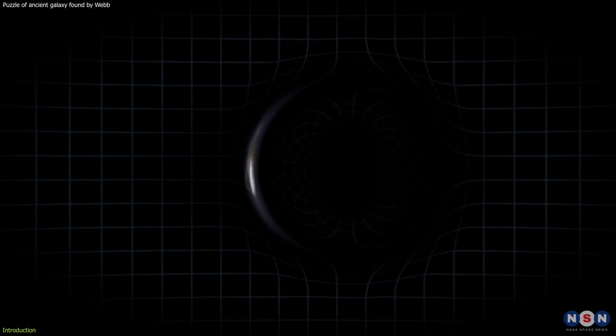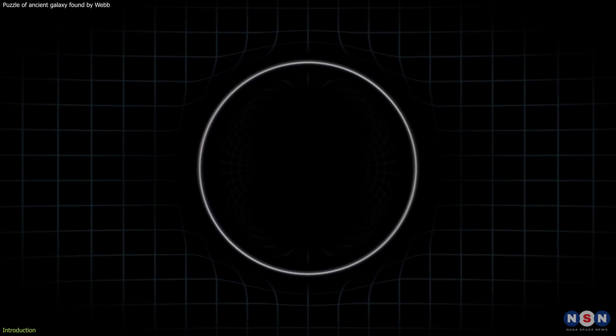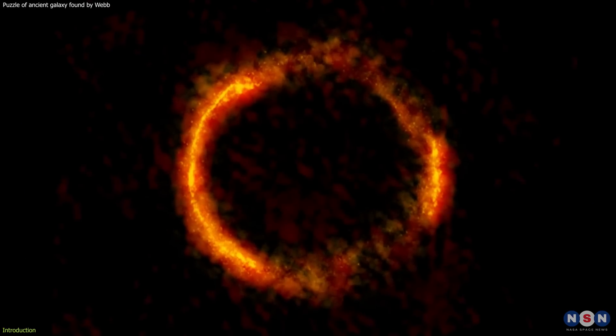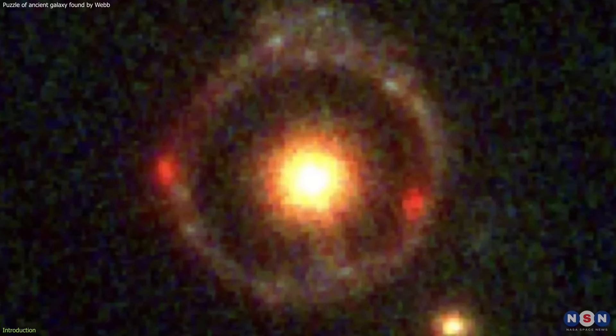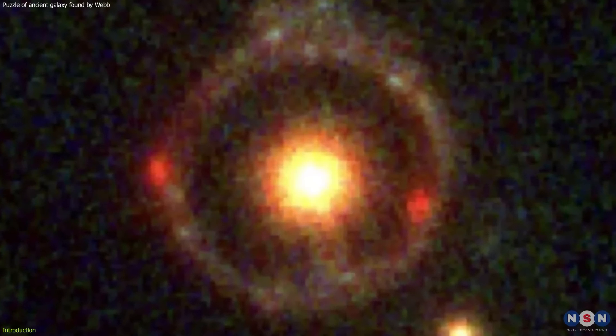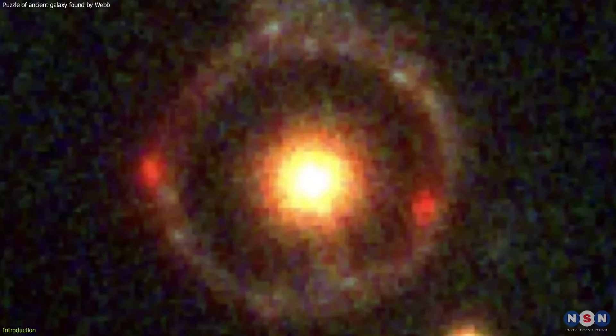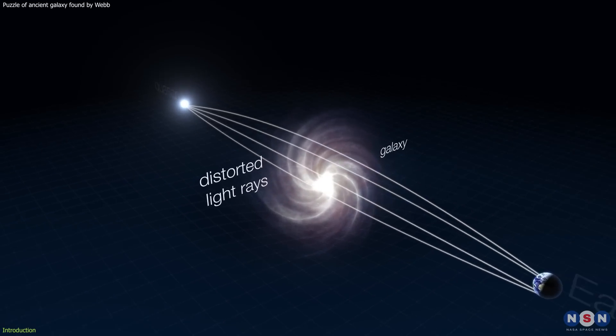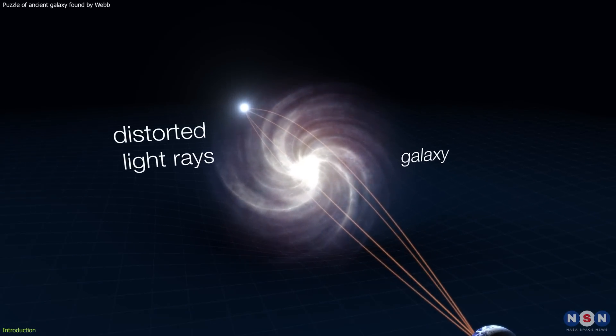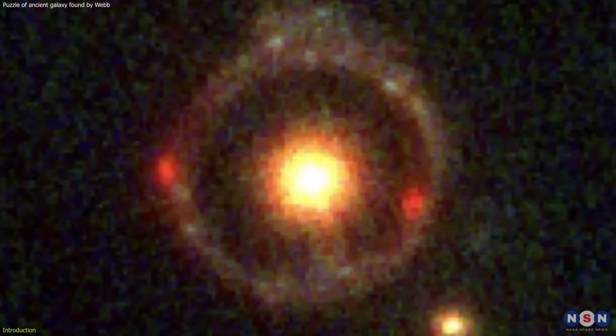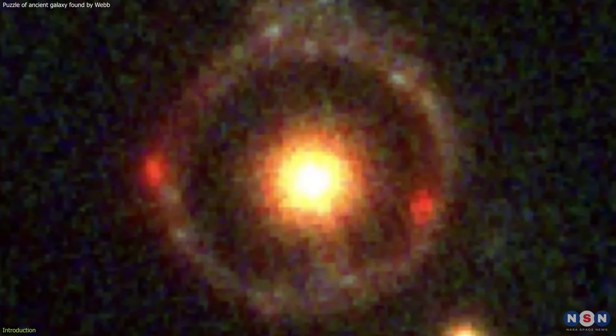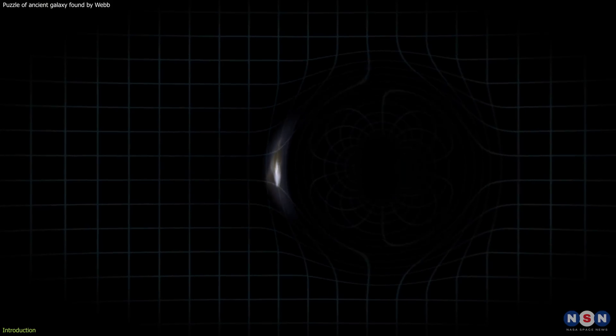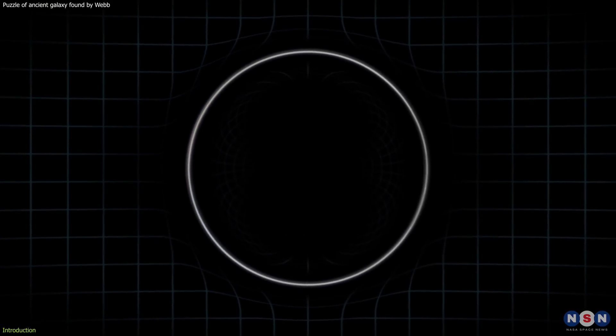This discovery was particularly surprising because of its association with an Einstein ring. This ring formation is a direct consequence of JWST-ER1G acting as a gravitational lens. By bending the light from a distant source, the galaxy causes it to appear as a circular ring, perfectly illustrating strong gravitational lensing, a critical prediction of Einstein's theory of general relativity.